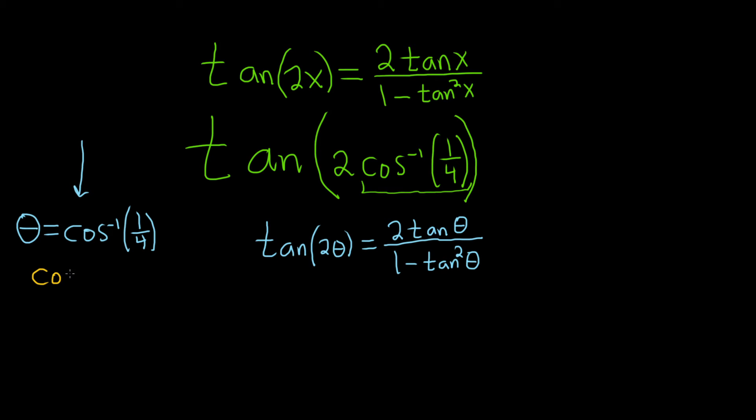So the cosine takes theta and sends it back to 1/4. And now we can use SOH-CAH-TOA. And that means that cosine is adjacent over hypotenuse. So it's going to be A over H.